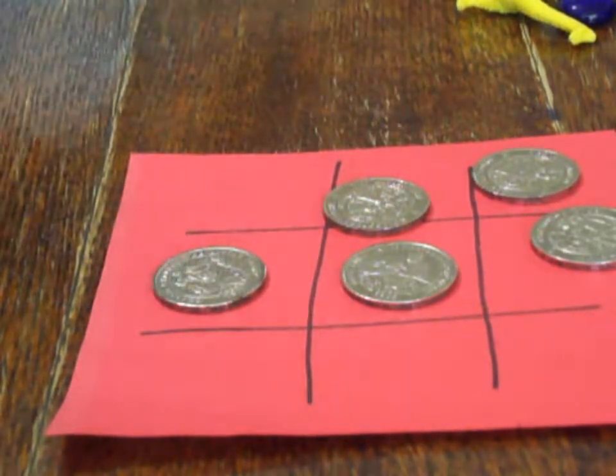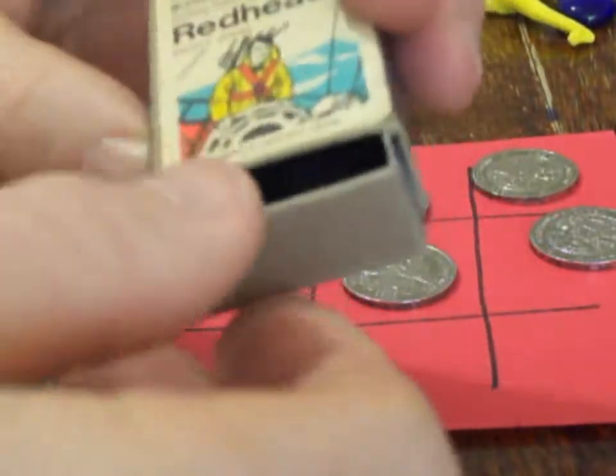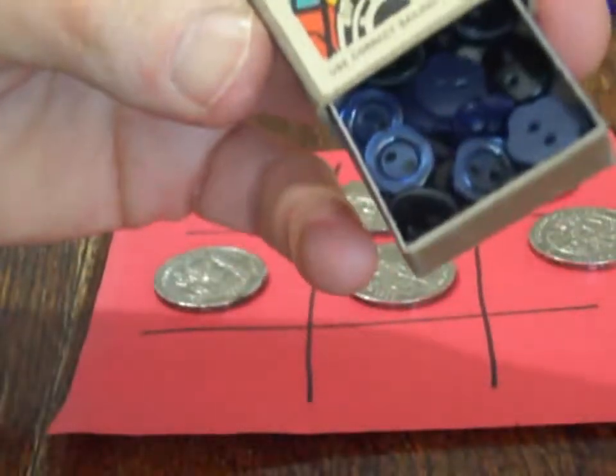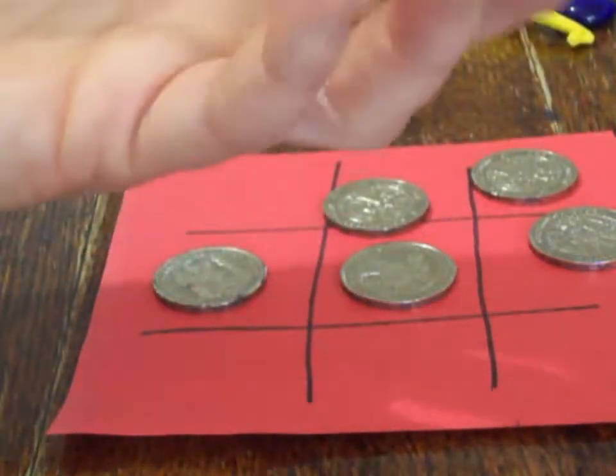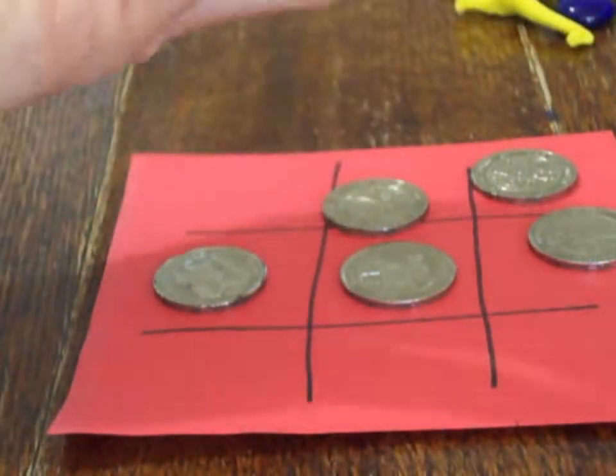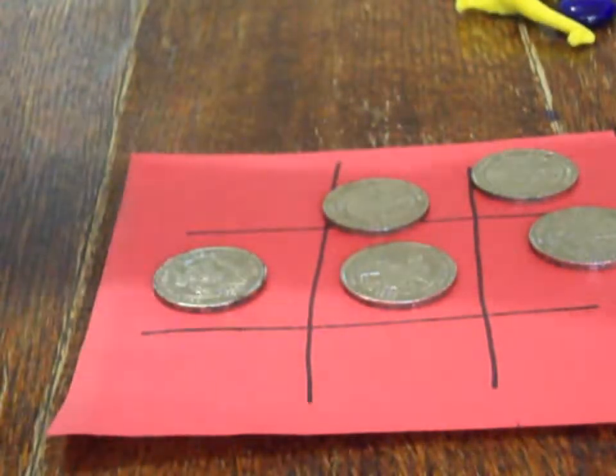Over in the matchbox here, I forgot to show you these. Matchboxes are really handy for storing things, especially smaller things. Here we've got buttons, so another possibility for counters or chips. They're smaller, a little bit fiddly, but kids' fingers can often handle slightly smaller objects without too much difficulty.